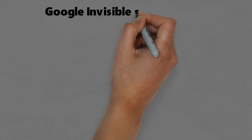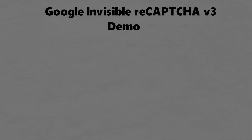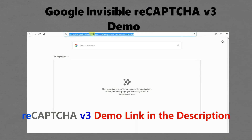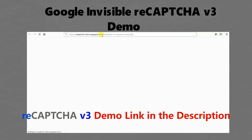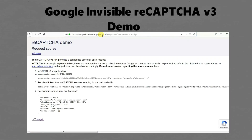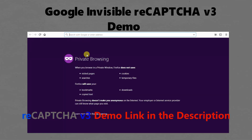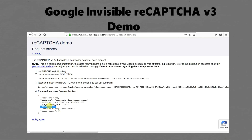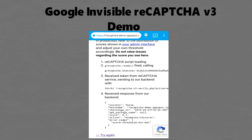Now let's see the demo of reCAPTCHA v3. If you visit the demo link from Google Chrome while logged in with your Google account, you will most likely receive a high score of 0.9, which means you are not a bot. If you open the link in incognito or private browsing mode, you will receive a lower score, for example 0.7. If you try the demo with the Ghostery app, famous for privacy protection, you will receive a score of 0.1, which means you are classified as a bot.